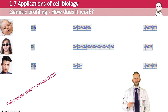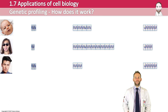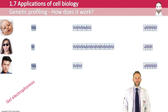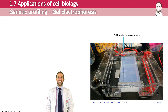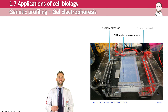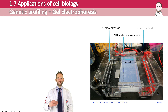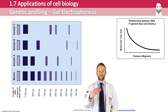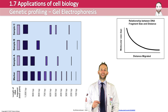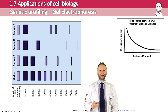Now that they have been isolated and amplified, these DNA fragments need organising into size. This can be done using a technique called gel electrophoresis, which is used to separate out DNA fragments according to their length. DNA fragments get loaded into a well in an agarose gel, which is submerged in buffer solution. A current is then passed through the gel. DNA is negatively charged and so moves towards the positive electrode. The shorter the DNA fragment, the faster it will move through the gel, and the fragments separate out according to the length of their base pairs, creating the banding pattern.